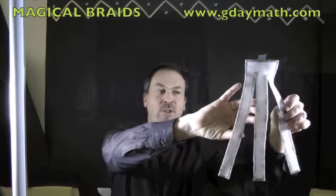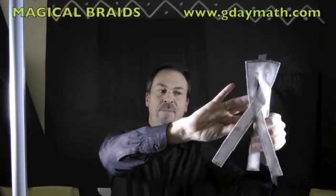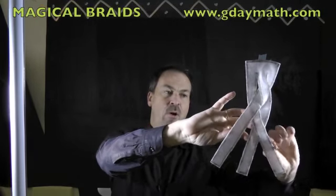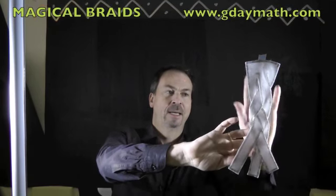You take the rightmost strand, cross it over to the middle, bring the leftmost strand, then cross that to the middle, then the rightmost and the leftmost, and you alternate. Down you go. And that makes, as we can see here, a nice beautiful braid.